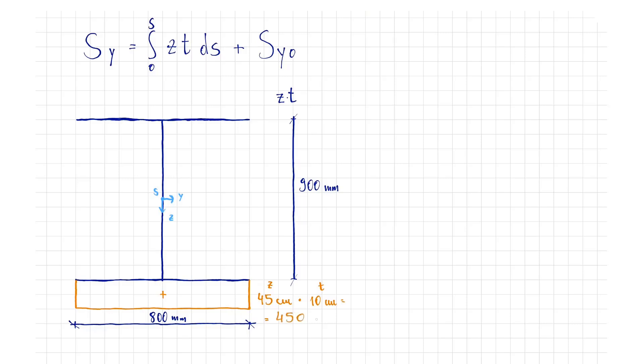We apply the same values in the web below and it automatically goes to zero and continues to run to minus 450 square centimeters. This value remains constant in the upper flange.